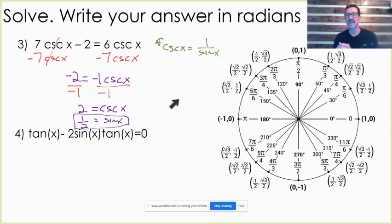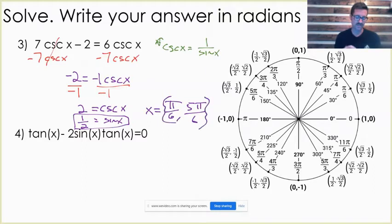By rewriting cosecant in terms of sine, now I can use my unit circle to identify my values. If I look on my unit circle, we have y is 1 half and y is 1 half. So our final answer here would be x is pi over 6 and 5 pi over 6.